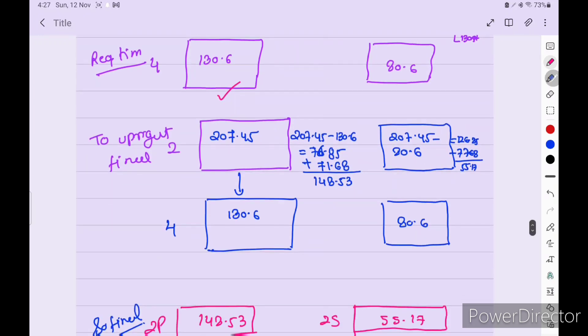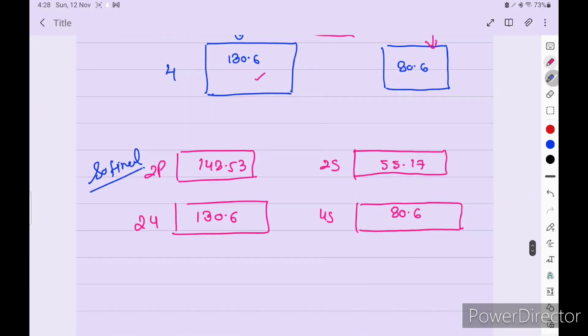Again I repeat, initially was 207.45 each side. Required trim 130.6 here, 80.6 here. So 207.45 minus 130.6 gives 76.85. Now starboard, we transfer 71.68 from here to here, so 148.53 final. Initially 207.45, transfer aft side 80.6, so 126.85. We transfer 71.68 from 2 starboard to 2 port to upright, so remaining 55.17. This is our answer.